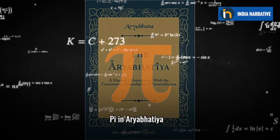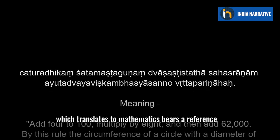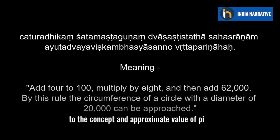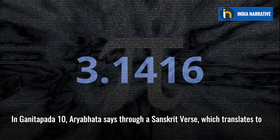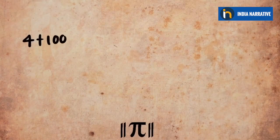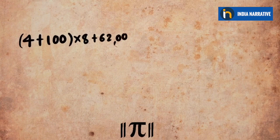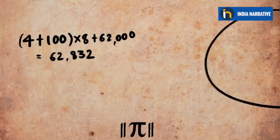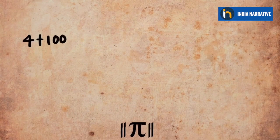Pi in Aryabhatia: The second chapter of Aryabhatia, called the ganit pada, which translates to mathematics, bears a reference to the concept and approximate value of pi. In ganit pada 10, Aryabhata says through a Sanskrit verse which translates to: add four to hundred, multiply by eight, and then add sixty-two thousand. By this rule, the circumference of a circle with a diameter of twenty thousand can be approached.